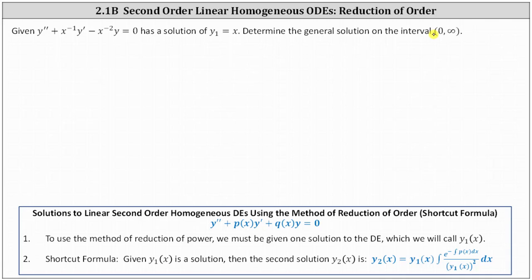This time, we'll solve it using the shortcut formula shown below, where if the second-order linear homogeneous differential equation is in the form of y double prime plus p of x times y prime plus q of x times y equals zero, then the second solution y2 of x is equal to y1 of x times the integral of e to the power of the opposite of the integral of p of x dx, divided by the square of y1 of x. We can use this to find a second solution, and then the general solution is made up of the linear combinations of y1 and y2.